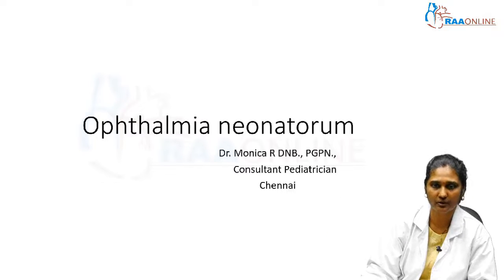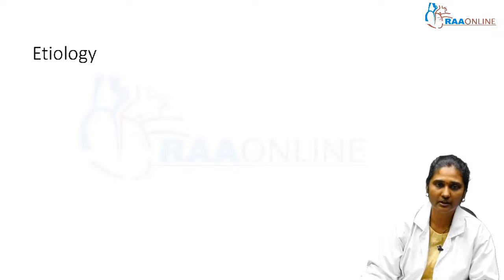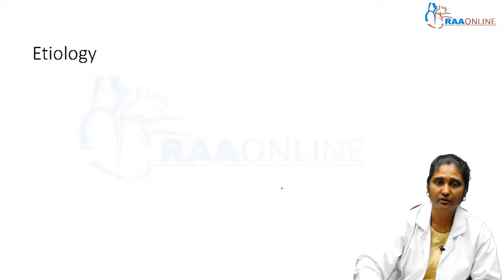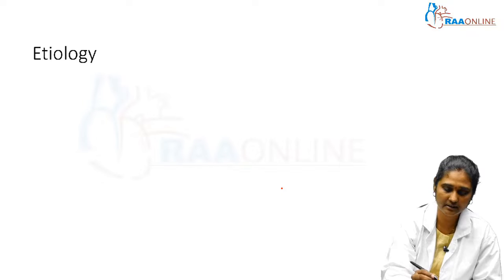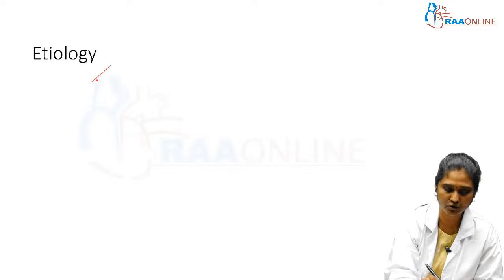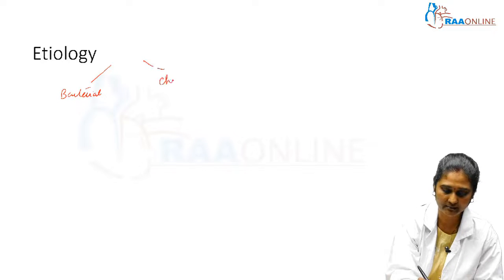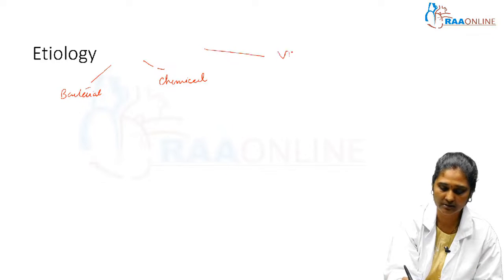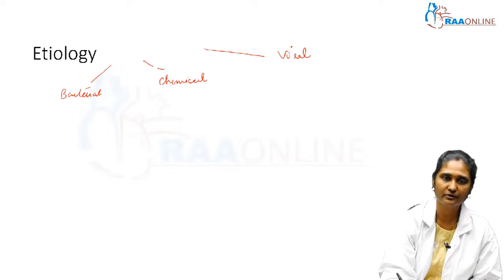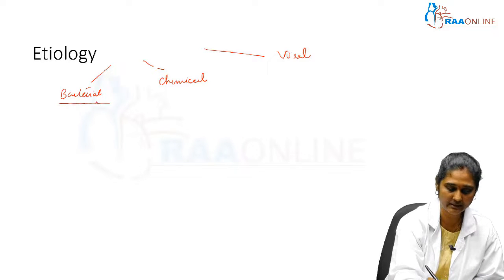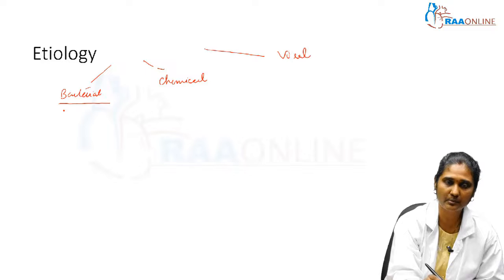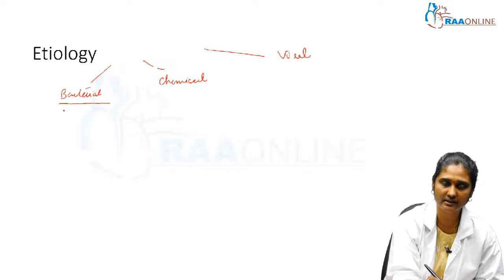Coming to the etiology, that is the causes of ophthalmia neonatorum, there are basically three causes: the most common is bacterial, next is chemical — chemical-induced conjunctivitis — and the third is viral-induced conjunctivitis. Of these, the most common is bacterial.